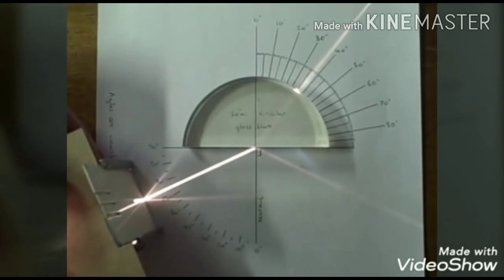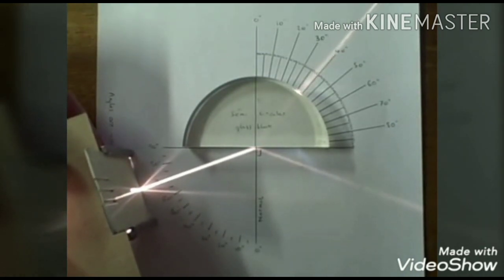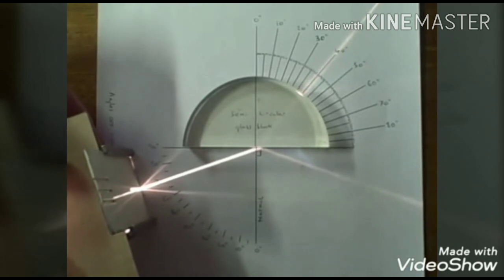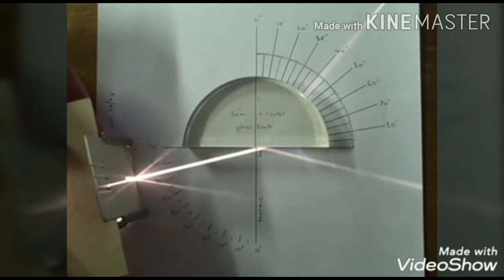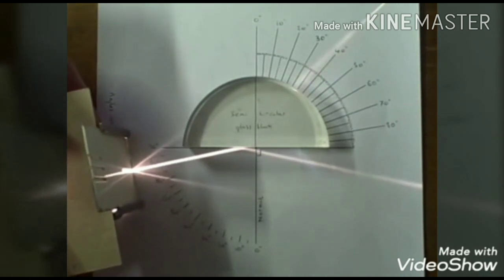Here you can observe both reflection and refraction. When a light ray is incident on any surface, two phenomena take place — and of course a third phenomenon, absorption, also occurs depending on the nature of the material. This is the Snell's law experiment. Note the values in the table, perform the calculations, and you will find that sine i divided by sine r equals a constant.